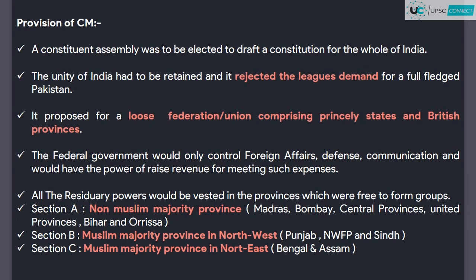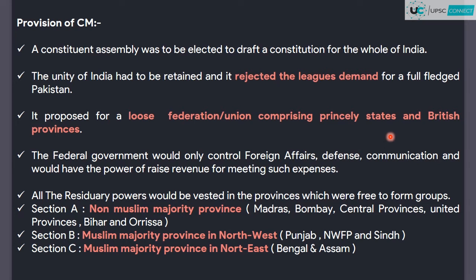Cabinet Mission's main provisions were: first, a Constituent Assembly was elected which would draft a constitution for the whole of India. The Muslim League's demand for a separate Pakistan was totally rejected. It proposed a loose federation or union including princely states plus British provinces. The federation or union government would control foreign affairs, defence, and communication, and would have power to raise revenue to meet expenses for handling these departments. The rest of the other powers, called the reservoir powers, would be vested in the provinces.